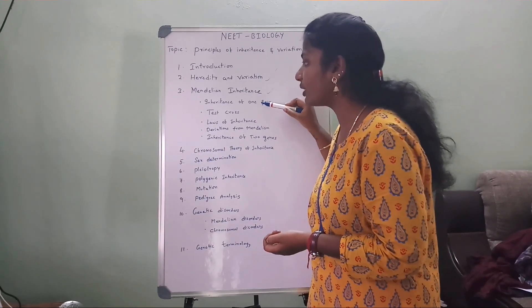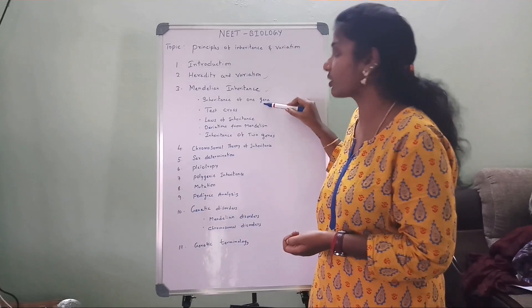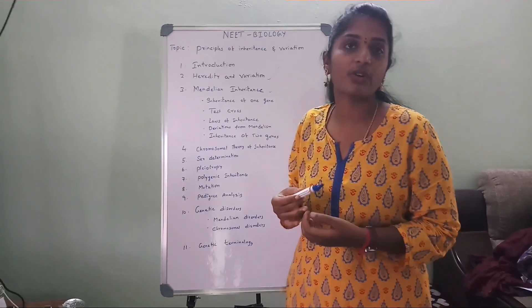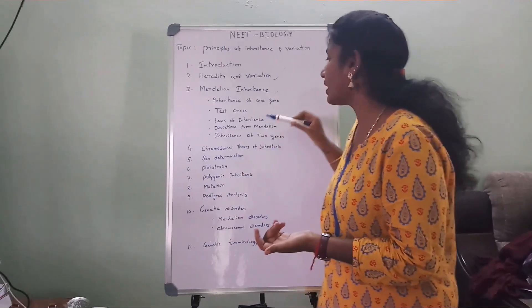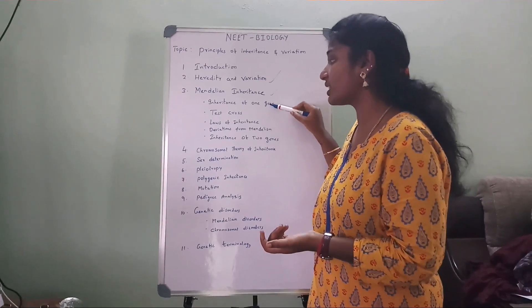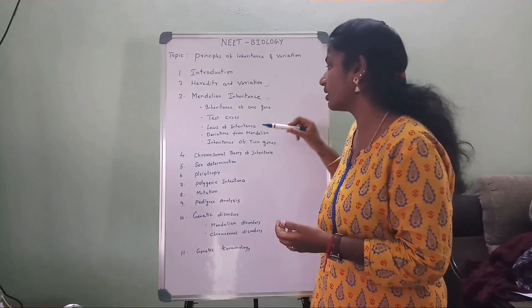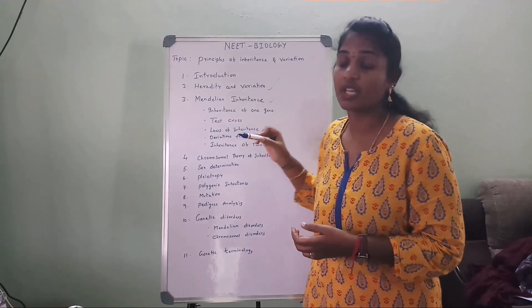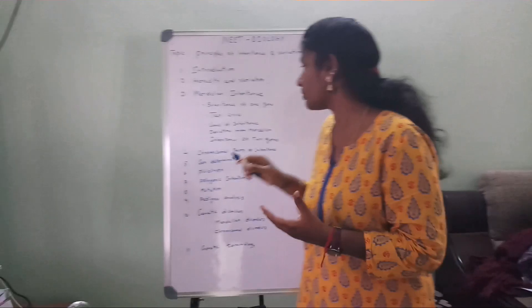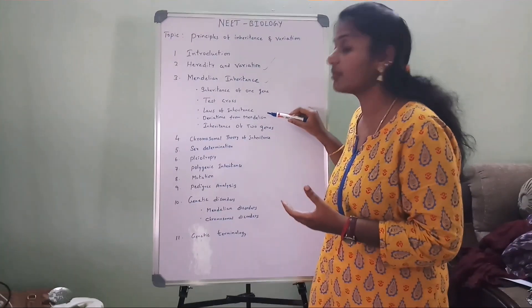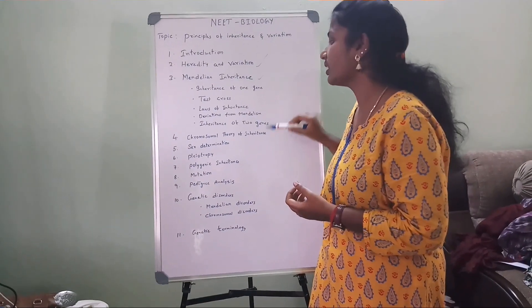In this topic we are going to cover inheritance of one gene — that means monohybrid cross — and test cross, which is how we test different types of genotypes. Next are the laws of inheritance. Based on his monohybrid cross, Mendel proposed certain laws of inheritance. Next is deviation from Mendelism — co-dominance and incomplete dominance do not come under Mendelism, and we are going to discuss those in this section.